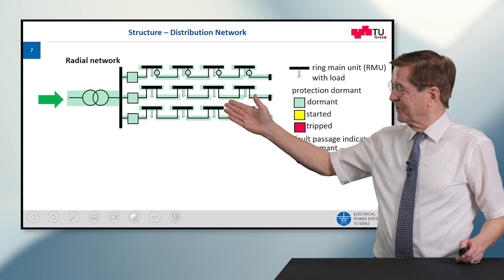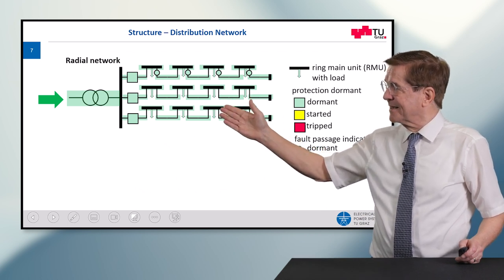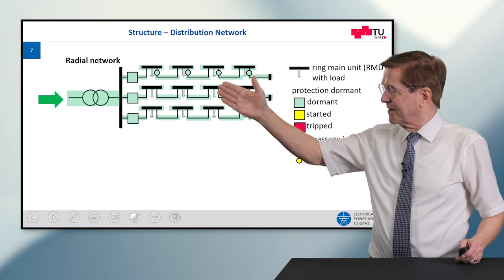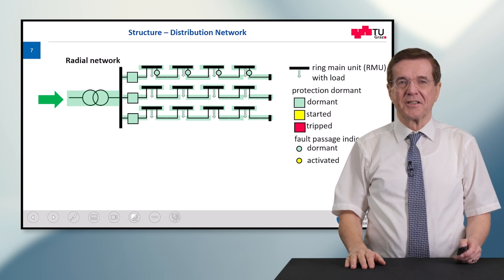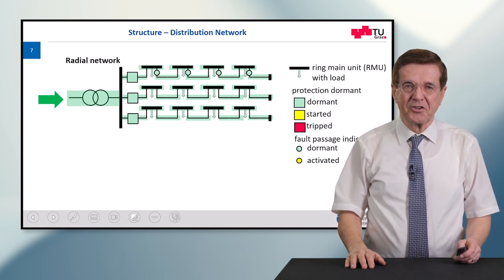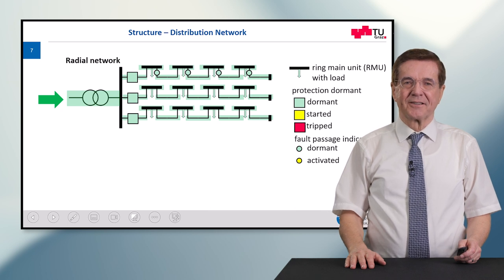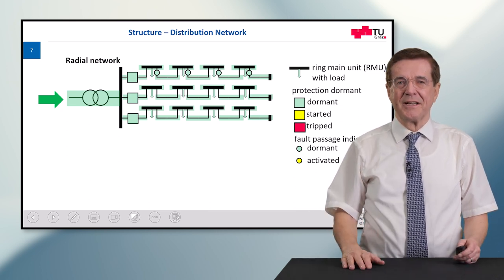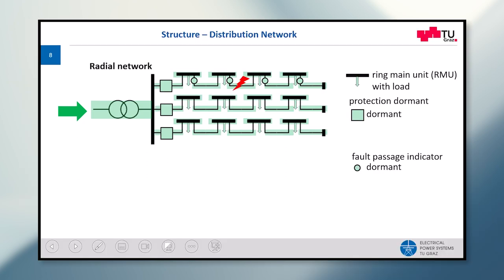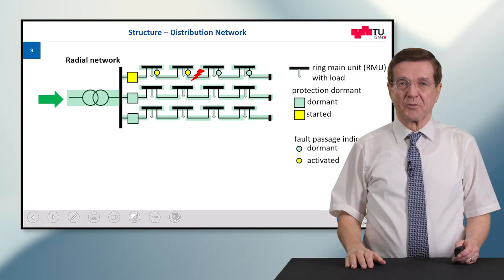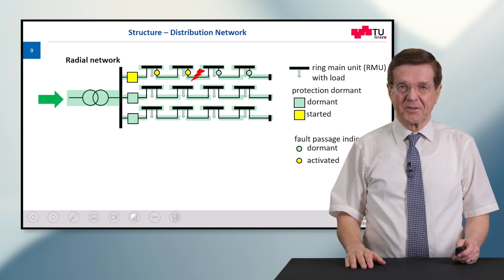Here you can see to my right side a typical radial network. The power and energy come from the left side through the transformer and are then distributed to each individual consumer, connected to the horizontal stripes — these are the so-called ring main units or local substations. Now a fault happens: a short circuit causes a large current from the transformer through the feeder to the fault point, and consequently the protection is triggered and the fault passage indicators pick up.